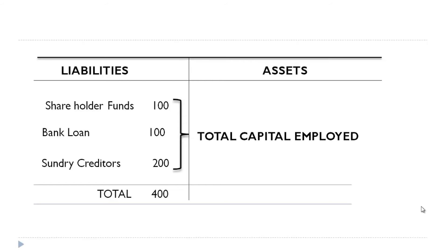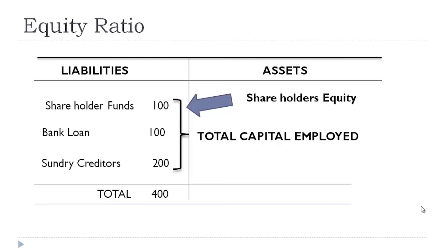Now we are concerned about equity ratio. So first we should know what is the equity component in this. The shareholder funds is the equity component in the total liabilities — this is the shareholders equity. Now we have to calculate equity ratio. So we have to establish a relationship between the shareholders equity and the total capital employed so that we will be able to calculate equity ratio.